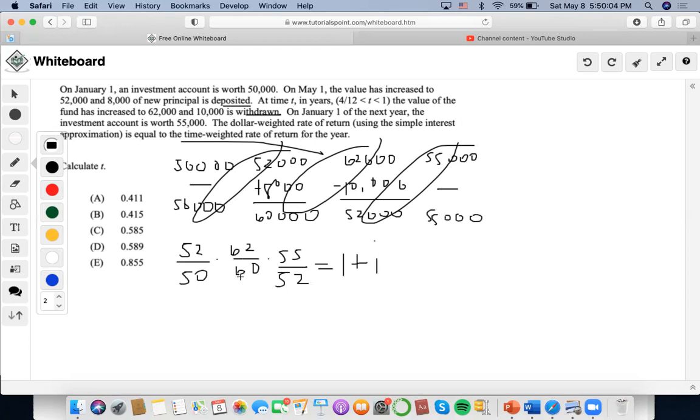We could do $52,000 times $62,000 times $55,000 divided by $50,000 times $60,000 times $52,000, and then minus 1. So the interest rate is going to be 0.1366.